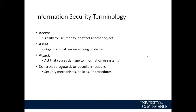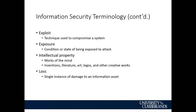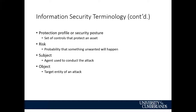Some terminology: assets are organization resources — information is money. We have to prevent an attack, someone trying to get into our information. Controls, safeguards, countermeasures, security mechanisms, policies, and procedures are all things we put in place to protect everything. Exposure relates to our property — intellectual property is a big part of that: literature, art, logos. Risk is the obviousness of being on the internet, and we have to reduce that. The object or target is what attackers are looking for.